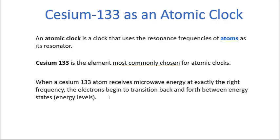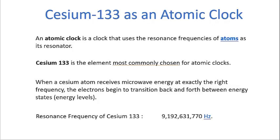The cesium atom absorbs radiation and emits radiation through the electrons. The electrons jump up and down a level and resonate back and forth — the atom absorbs the microwave energy and emits the microwave energy. In the cesium-133 atom, it does this very precisely and very accurately. The resonant frequency of the cesium atom is 9,192,631,770 hertz.